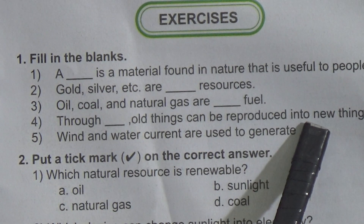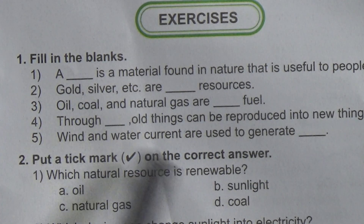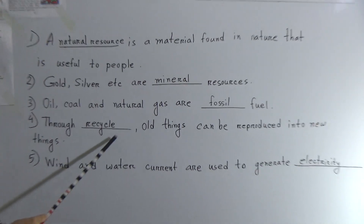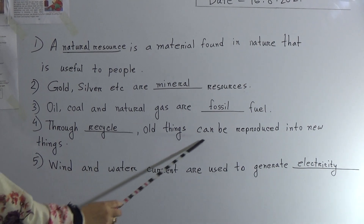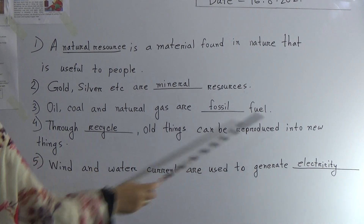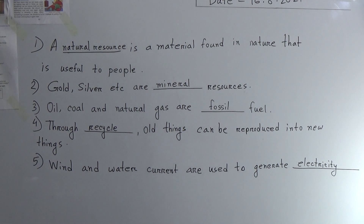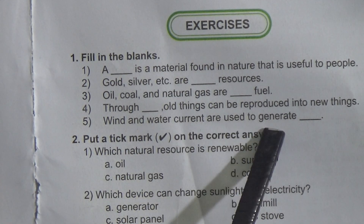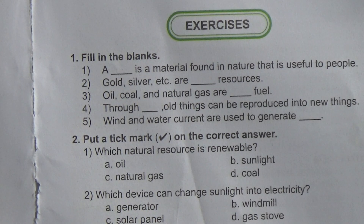Number four: 'Through dash, old things can be reproduced into new things.' Answer: recycling. Number five: 'Wind and water current are used to generate dash.' Answer: electricity.